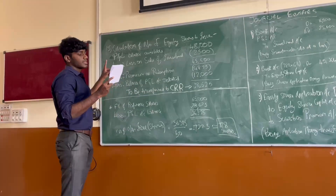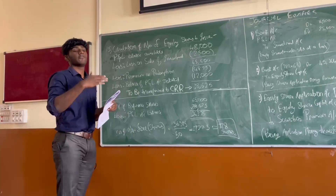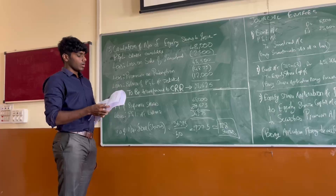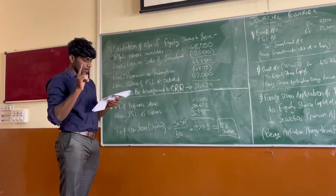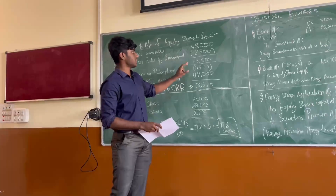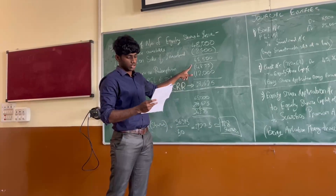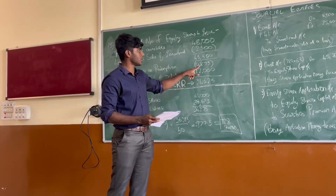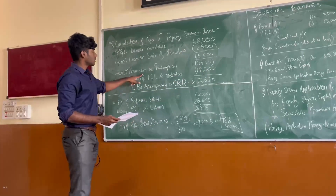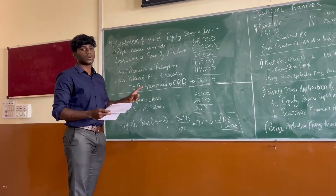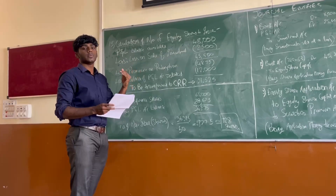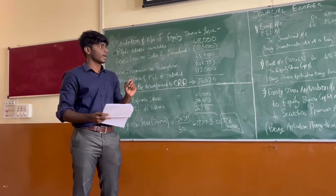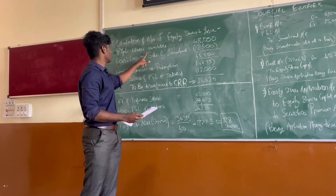As specified in the question, the preference shares have to be redeemed at a premium of 7.5%. So 7.5% on the total face value of preference shares, which is 65,000, equals 4,875. We deduct that from the Profit and Loss account, because as I mentioned, the premium paid on redemption of preference shares is considered as a loss or profit item, not equity — hence we deduct the premium on redemption from the P&L account.